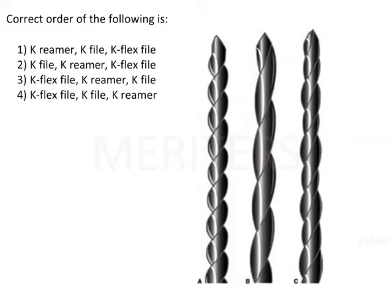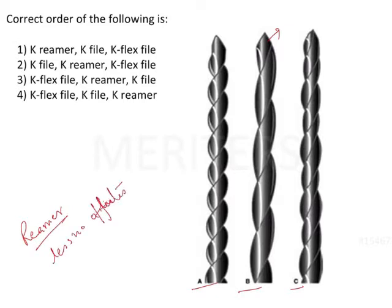The question asks for the correct order of the following instruments. A set of instruments is given as A, B, and C, and we have to identify which instrument is which in the correct order. First, we will identify which has a lesser number of flutes. This one has fewer flutes, and this is the reamer, because the reamer has a lesser number of flutes in comparison to files.